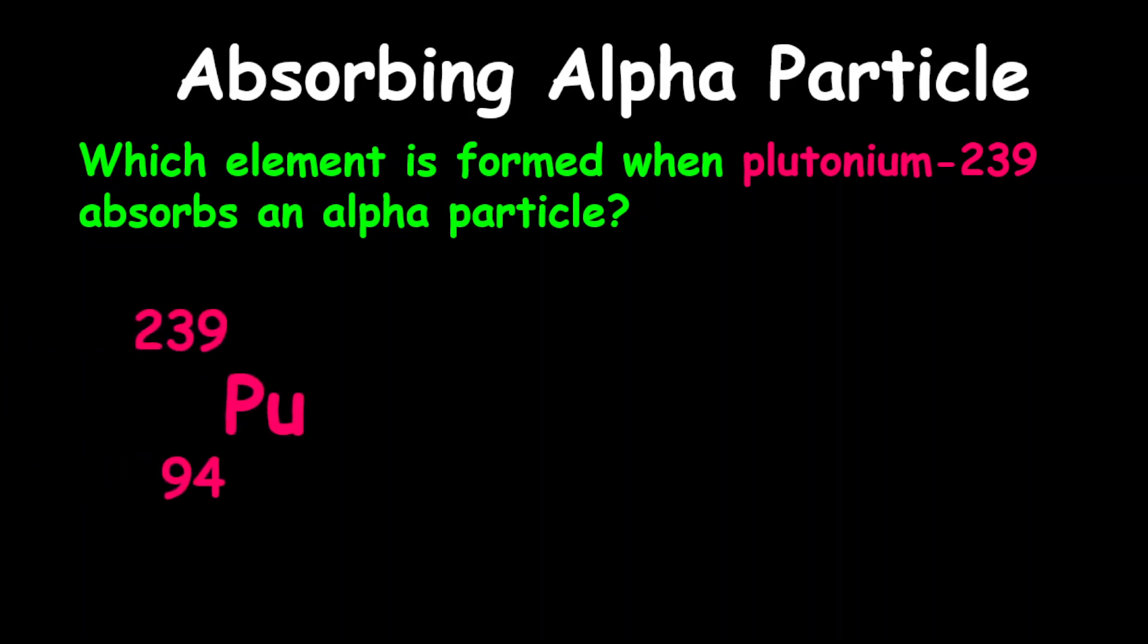Again, this is an absorption. Plutonium has a proton number of 94. We're absorbing an alpha particle. Therefore, we're going to add the alpha particle to plutonium.